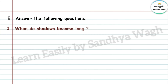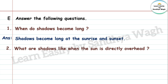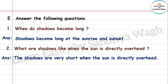Answer the following questions. 1. When do shadows become long? Answer: Shadows become long at sunrise and sunset. 2. What are shadows like when the sun is directly overhead? Answer: The shadows are very short when the sun is directly overhead.